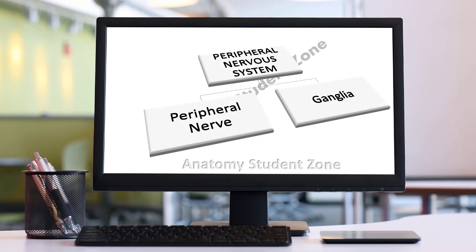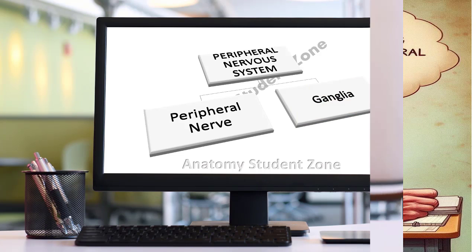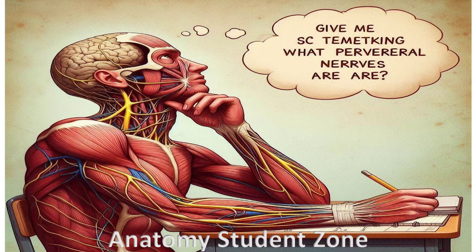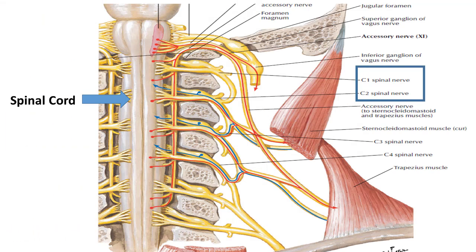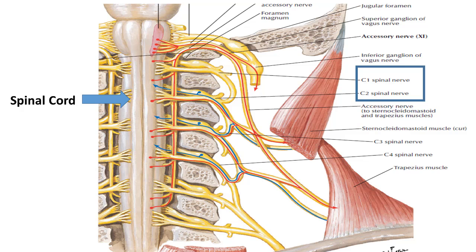We all know the peripheral nervous system consists of peripheral nerves and ganglia. Ganglia I have already covered in previous videos. These are all the nerves which are coming out from the central nervous system, or from the brain and spinal cord. Nerves coming out from the brain we name as cranial nerves, and nerves coming from the spinal cord we name as spinal nerves.